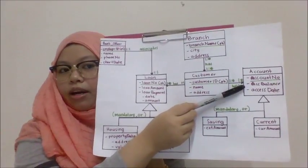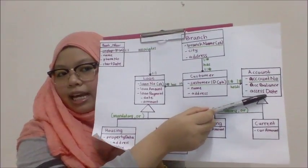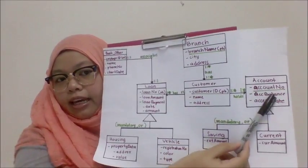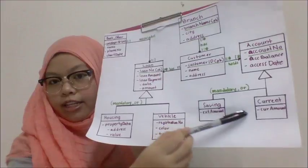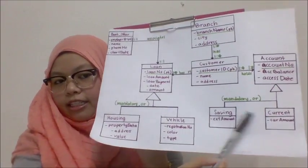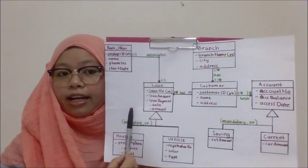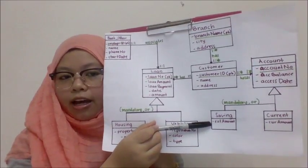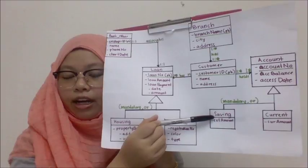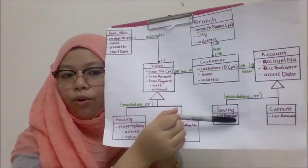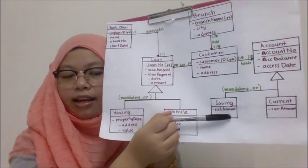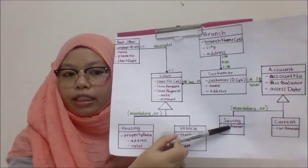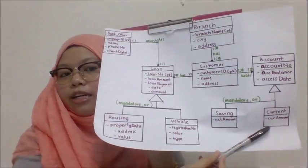The next entity is the account entity. The attributes are account number, account balance, and access date of the account. The account number is the primary key. The subclasses for the account entity are saving and current. Since no attributes were mentioned for the subclasses, I added extracted amount for saving and current amount for current.